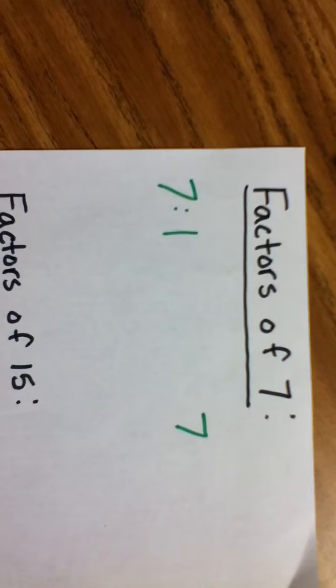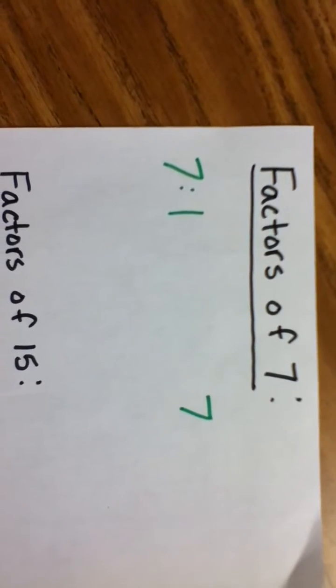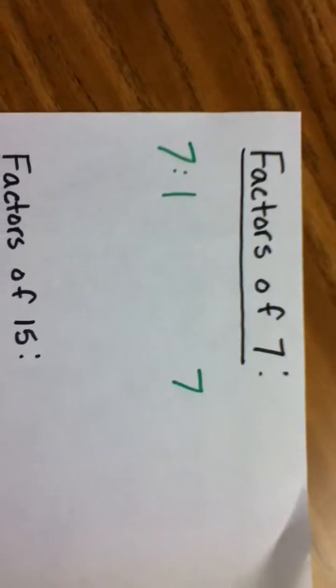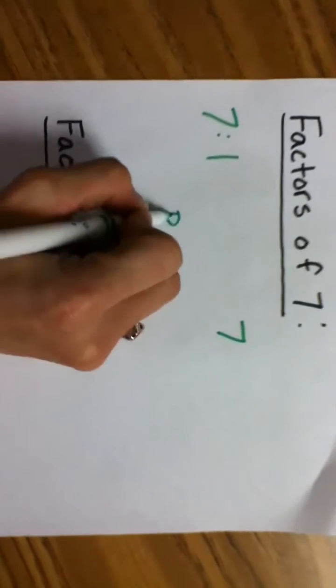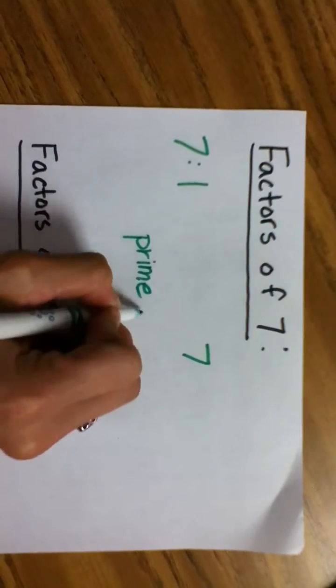Exactly 2. Which, from earlier, you'll remember that a number that has exactly 2 numbers, 2 factors, is a prime number.